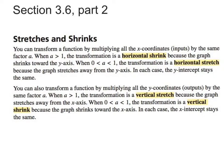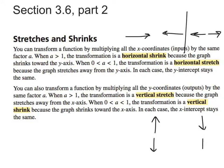A horizontal shrink is when you take the object and squish it side to side. A horizontal stretch is when you stretch it out. A vertical stretch is when you pull it up and down. A vertical shrink is when you squeeze it in — push it down, push it up.